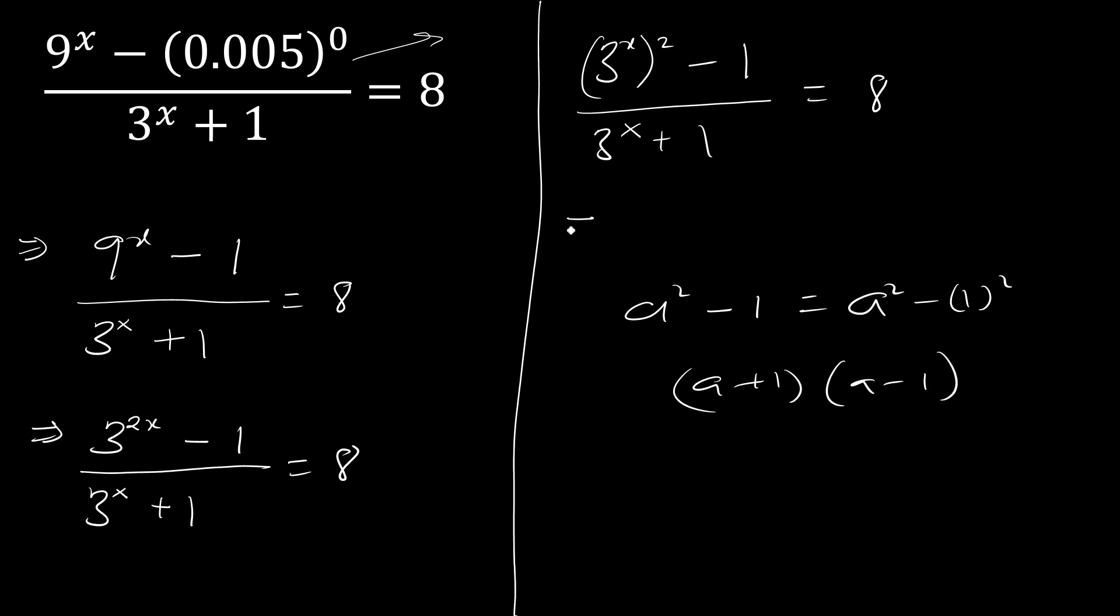So we can write the numerator as 3 raised to x minus 1, times 3 raised to x plus 1, over 3 raised to x plus 1.